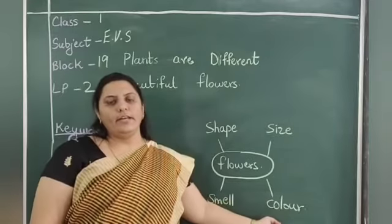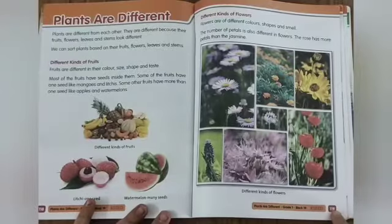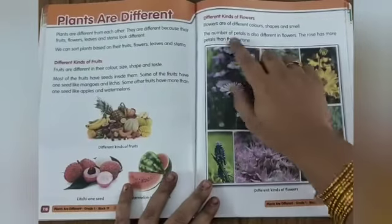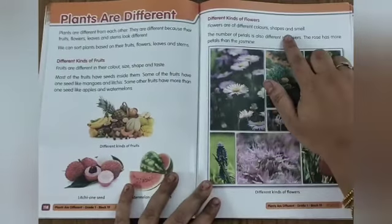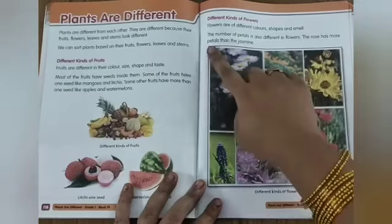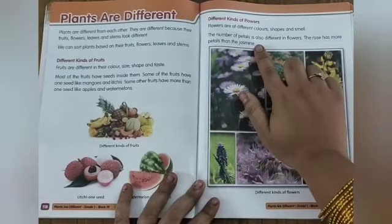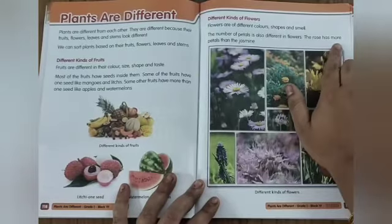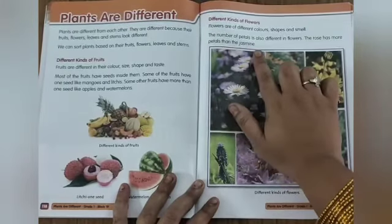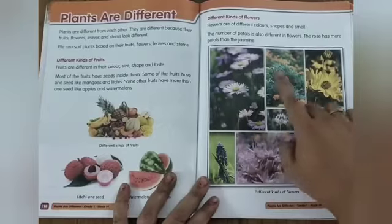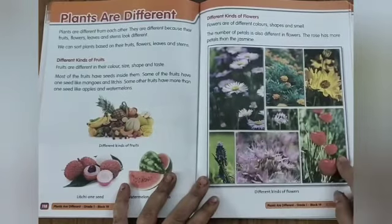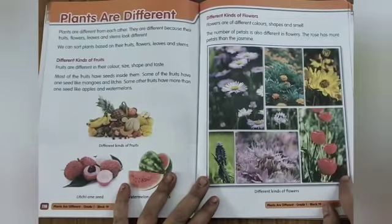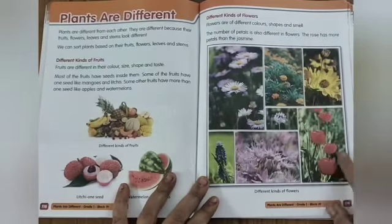Open your reader to page 119. Different kinds of flowers. Flowers are of different color, shape and smell. The number of petals is also different in flowers. The rose has more petals than the jasmine. So these are different kinds of flowers — can you see? Different shapes and sizes and the color is also different. So read this, children.